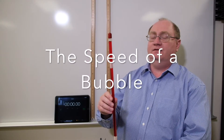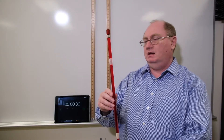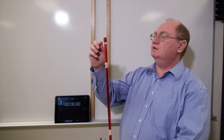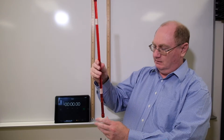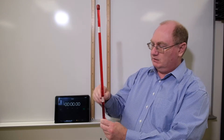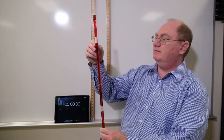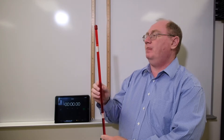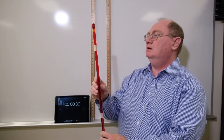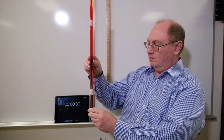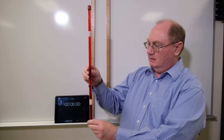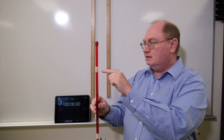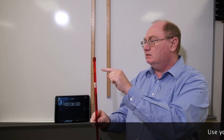Hi! We're going to find the speed of a bubble. In this tube there's a little bubble that when we flip it upside down, the bubble will start to rise, and you're going to determine the speed of that bubble. So every time we flip it over the bubble will rise. I like doing this keeping the bubble in the same spot because I think it looks cool.